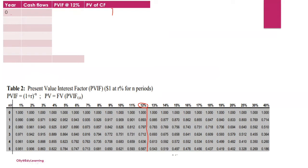Your table should have three columns: the cash flows (the figures provided), the present value interest factor (PVIF — the discount factor corresponding to your given rate and year, taken from a PVIF table), and the present value of each cash flow. Your rows cover year zero through year five.